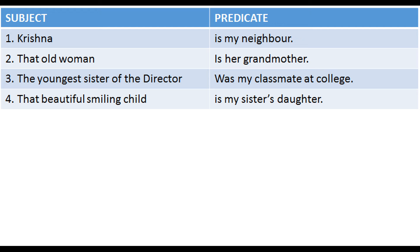Here the subject comes first and then the predicate. Krishna is the subject; 'is my neighbor' is the predicate. That old woman is the subject; 'is a grandmother' is the predicate. The younger sister of the director is the subject; 'was my classmate at college' is the predicate. That beautiful smiling child is the subject; 'is my sister's daughter' is the predicate.